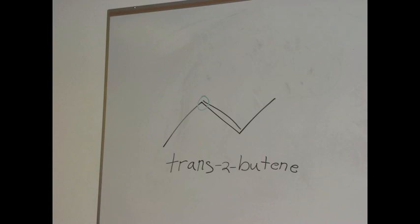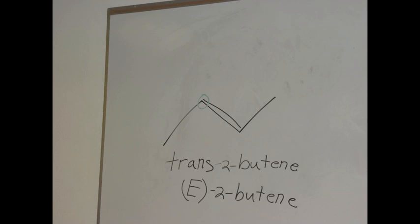This molecule is trans-2-butene, or E-2-butene. The two denotes that the second carbon in the chain is where the double bond begins. Thank you for watching, ZE END!